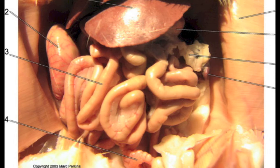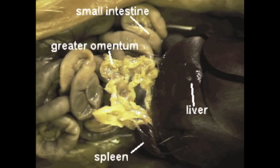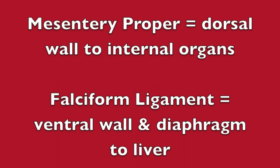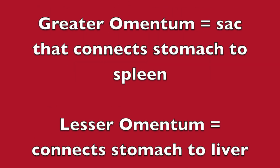It's covering the small intestines in this photo. The greater omentum is a double-walled peritoneal sac which extends from the greater curvature of the stomach to the spleen. The lesser omentum joins the lesser curvature of the stomach to the liver. To summarize: mesentery proper connects the dorsal wall to the internal organs; falciform ligament connects the ventral wall and diaphragm to the liver; parietal peritoneum lines the body wall; visceral peritoneum covers internal organs; greater omentum connects stomach to spleen; lesser omentum connects stomach to the liver.